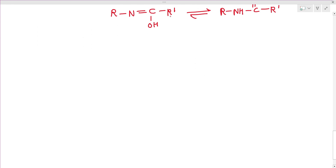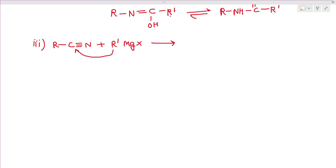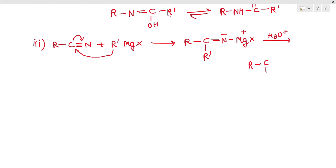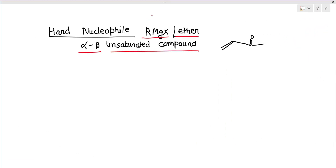For a nitrile (R–C≡N) reacting with R′MgX: the alkyl group attacks the electrophilic carbon, giving R–C(=NMgX)–R′ after bond shift. This undergoes acid hydrolysis to give R–C(=O)–R′ — a ketone. This is an important reaction type to know for the CSIR NET exam.